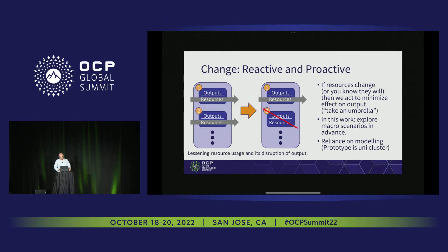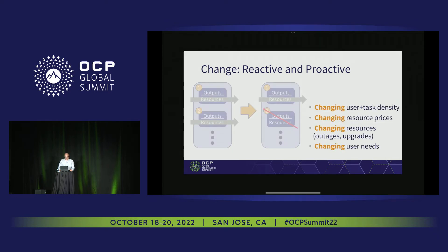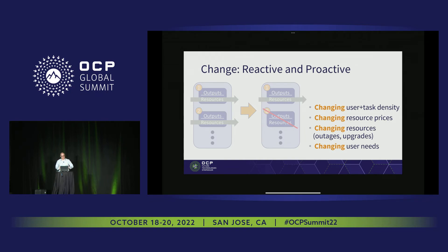This is being prototyped in a university cluster — they say eat your own dog food. The main thing to take away is that it's about dealing with change and having change as a first-order concern, rather than assuming there's going to be a service interface and change will be dealt with later in an ad-hoc way. So changes in user and task density, resource value, resource availability, and types of resources are all treated as first-order concerns.